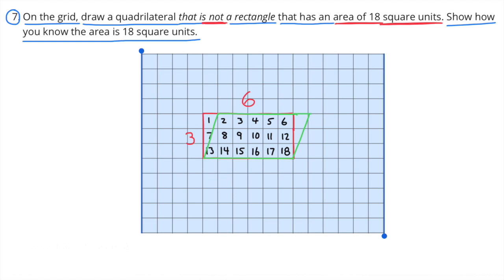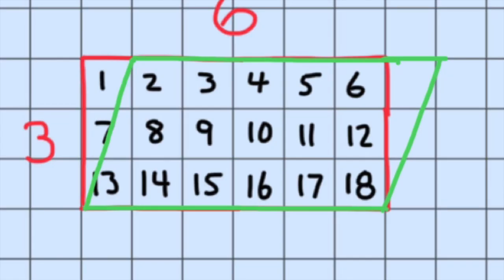On the grid, draw a quadrilateral that is not a rectangle that has an area of eighteen square units. Show how you know the area is eighteen square units. First I drew a rectangle that was three by six, so the area was eighteen square units, and I used that rectangle to help me draw a quadrilateral that is not a rectangle but still has an area of eighteen square units — drawn here in the green color.